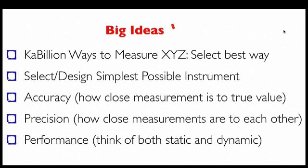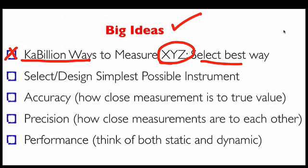The big ideas I want to leave you with. In general, there's many ways to measure anything we want to measure. What you always want to do is get in the literature, learn about some of the various ways, and select the easiest, best way to get the job done. Secondly, select or design the simplest possible instrument. Save the more complicated instruments for iteration three, four, or five. But especially when you're first starting an experiment, do things in the simplest way possible.